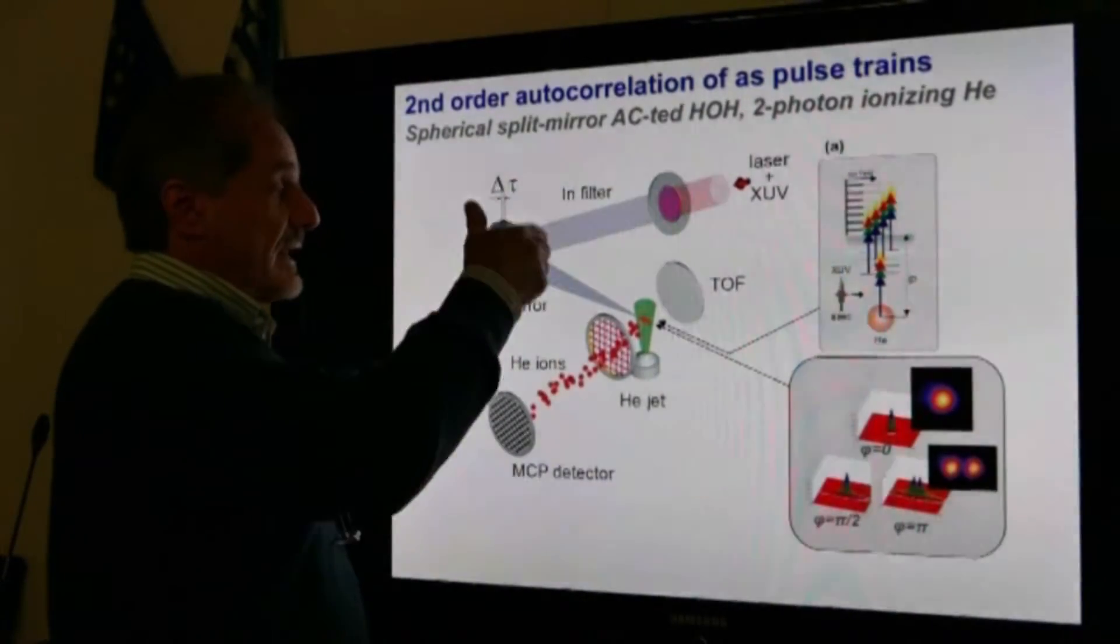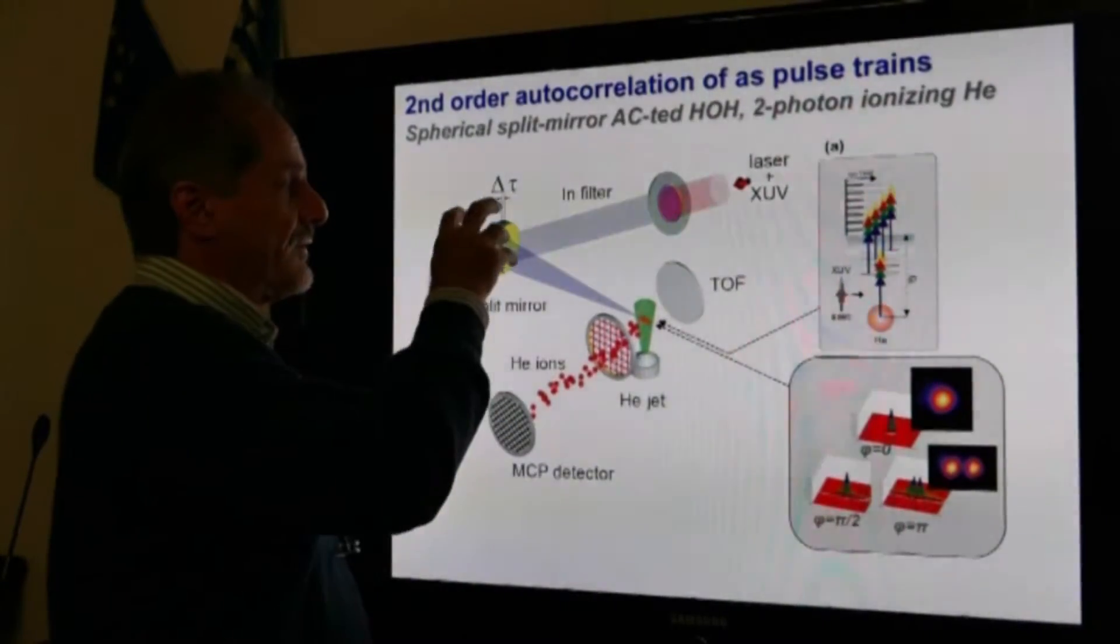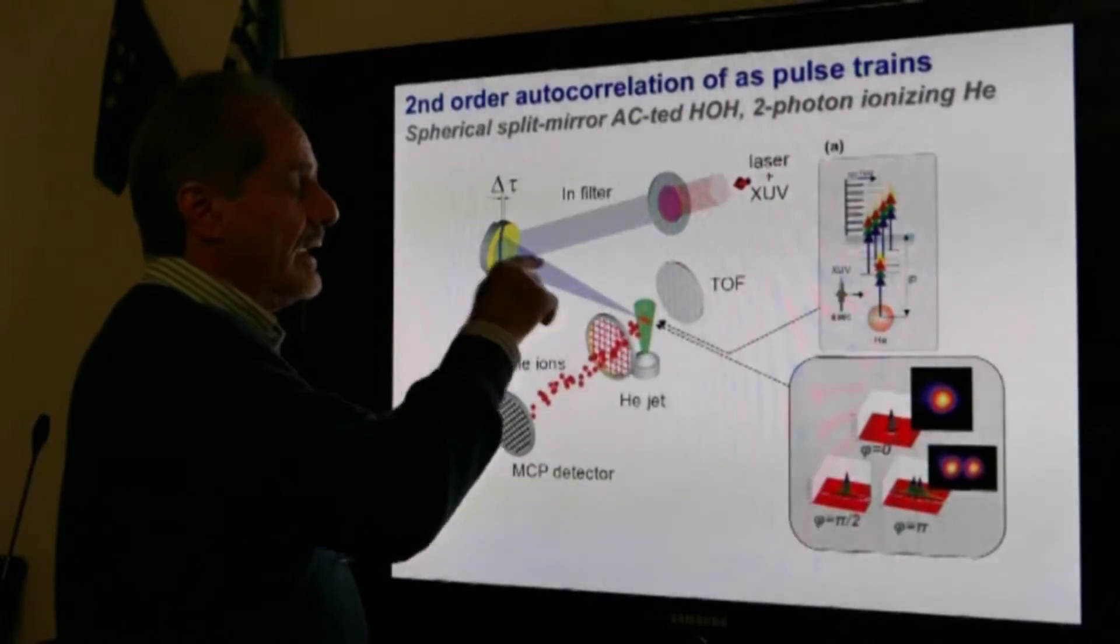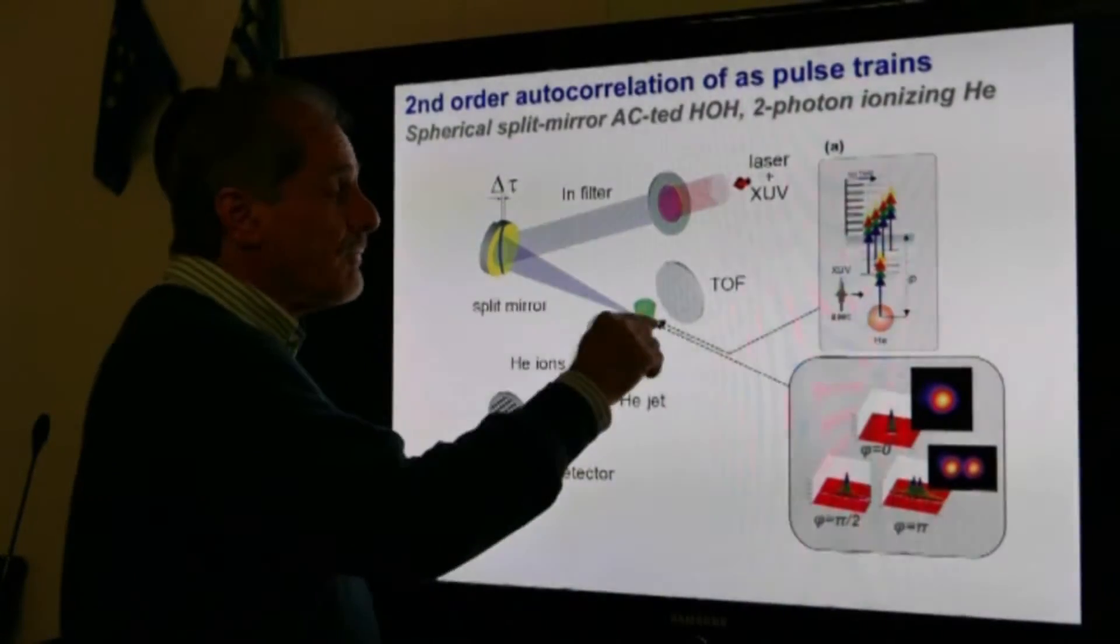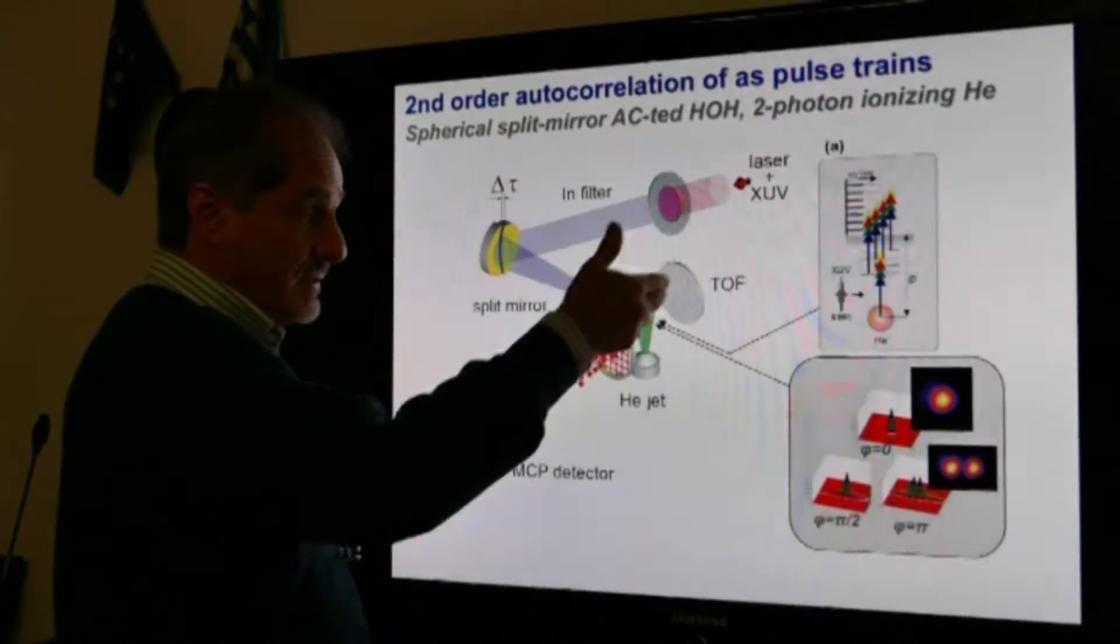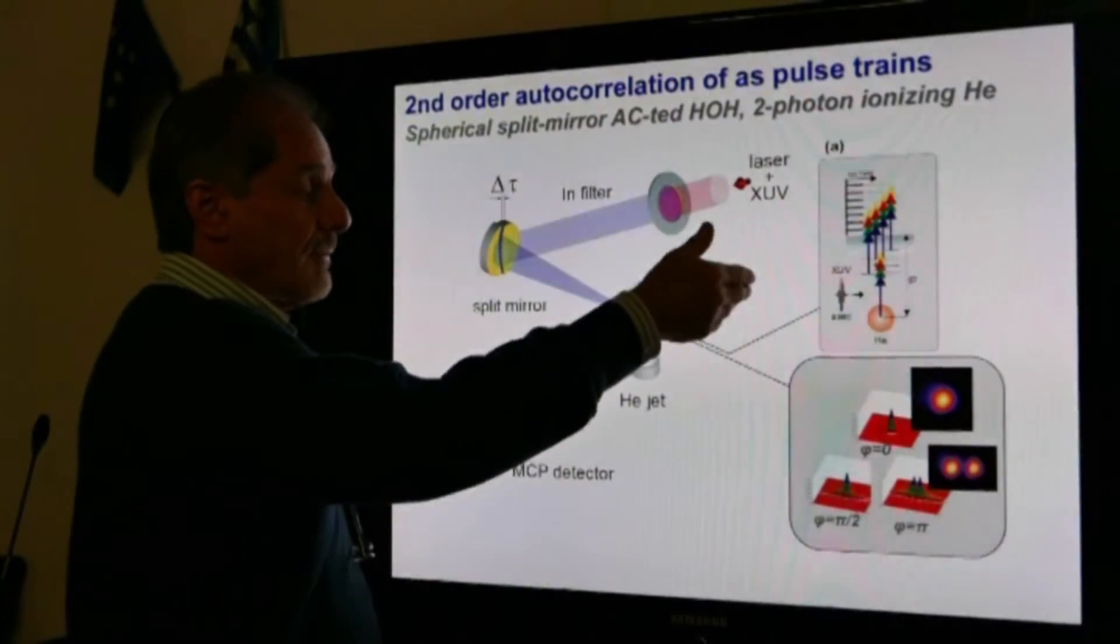This technique is based, as I said, on a split optical element. Here is a spherical mirror. The spherical mirror is focusing the XUV radiation into a gas jet which is two-photon ionized, and ions of this ionization are observed through a time-of-flight spectrometer.